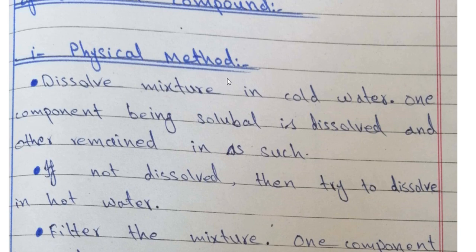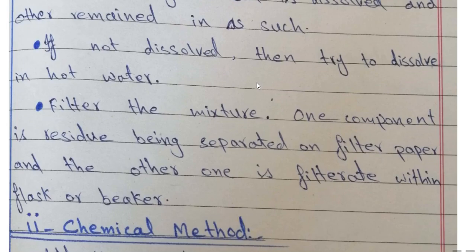Otherwise, one component will dissolve and the other won't. If both components dissolve in distilled water, you filter and separate them. If the material is not dissolving, you heat the mixture using a tripod stand and burner to dissolve it in warm water. Hopefully it will dissolve, and then you filter it.